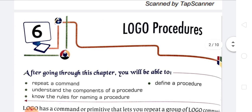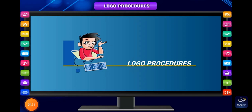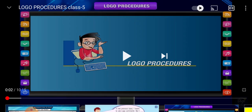Now let's come to logo procedures. Logo has a command called 'repeat' that lets you repeat a group of logo commands multiple times. This primitive is known as repeat — r-e-p-e-a-t. Let us learn about this command and see the definition of logo procedures.